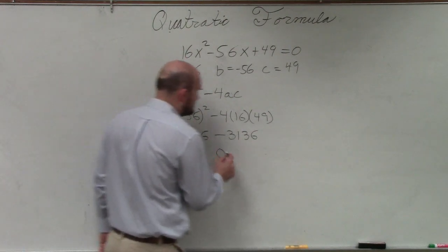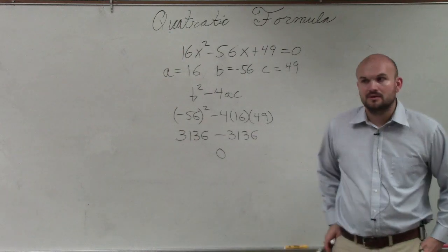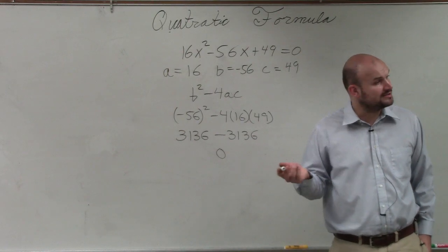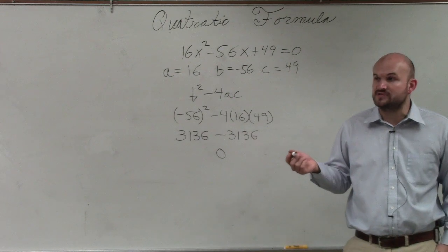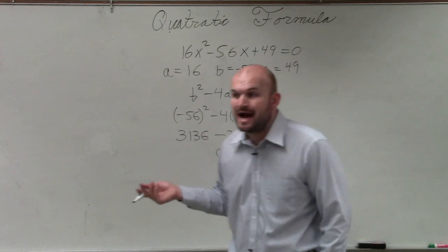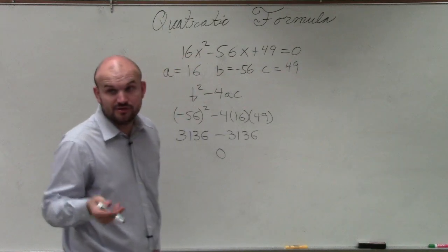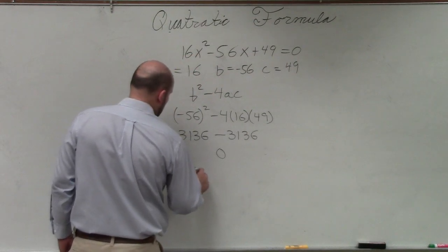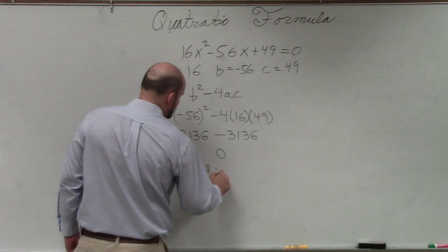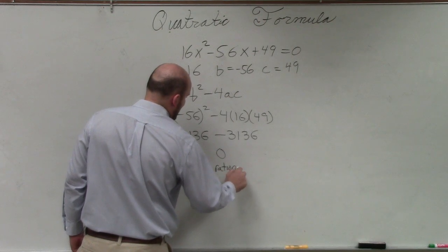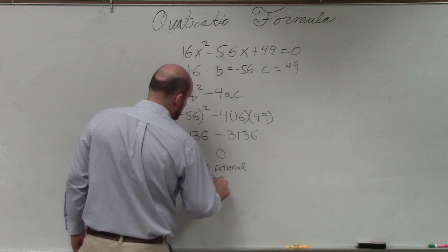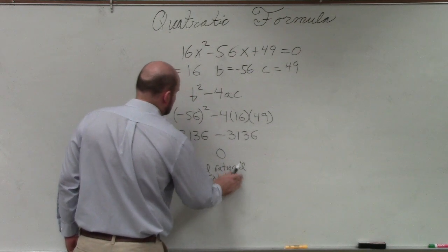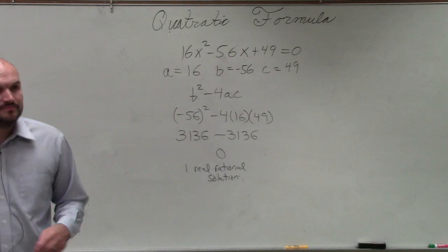So therefore, when I subtract those, I get 0. So I go back to that little note that I wrote down, and I say, OK, so my discriminant has a value of 0. So if I was going to describe the number of solutions, I would say one real solution. I should have told you guys this, but it's also one real rational solution. And there you go, that's it.